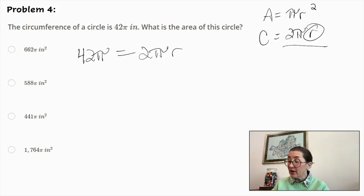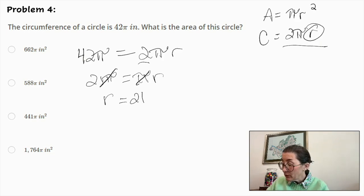So let's begin by dividing each side by 2. So now we have 21 pi is equal to pi r. And we can divide each side by pi, and we end up with r is equal to 21. So now let's plug that into the formula for the area.